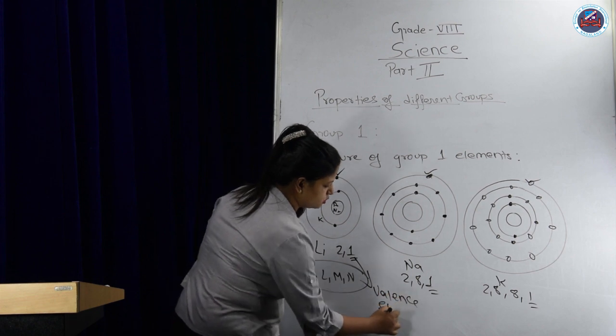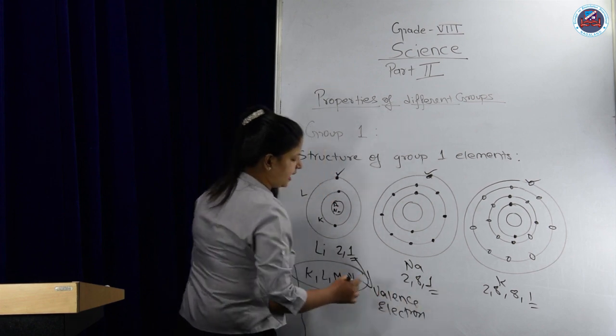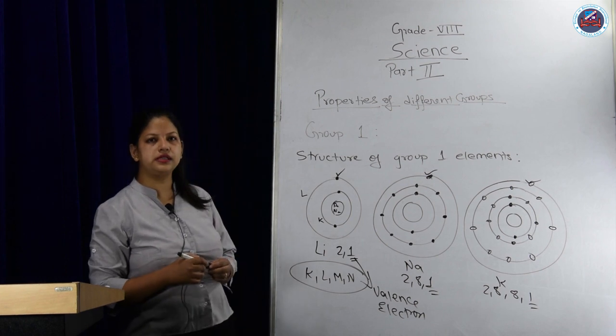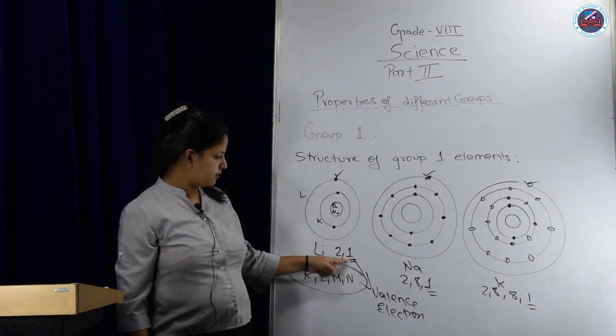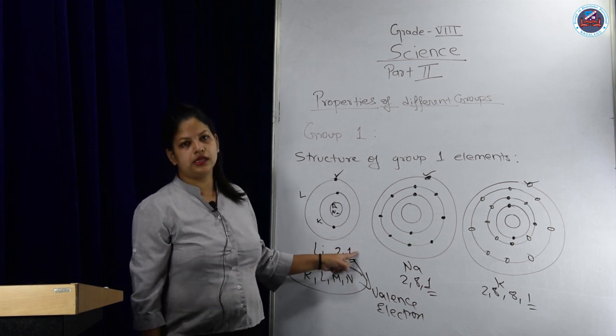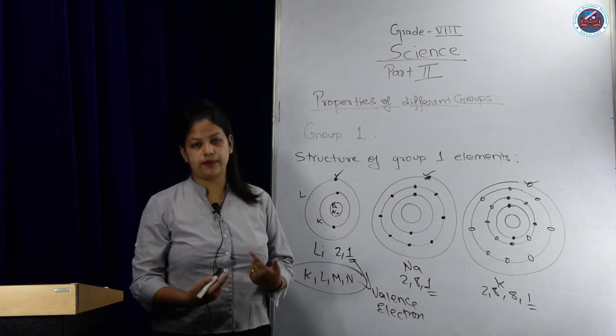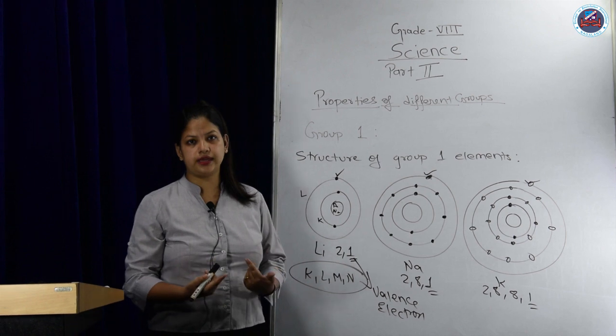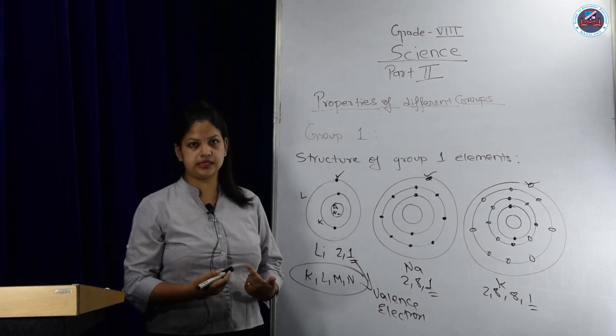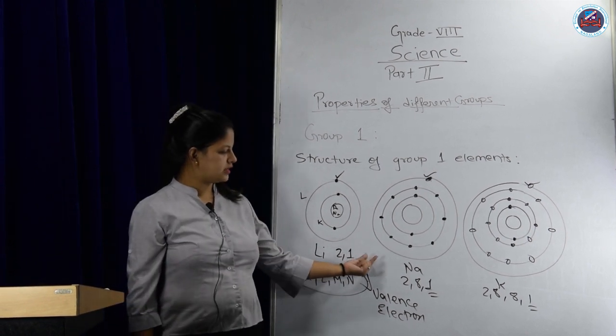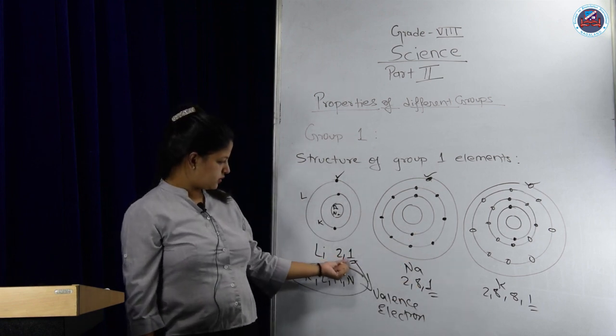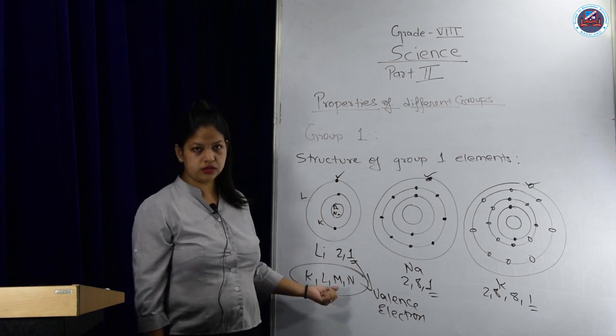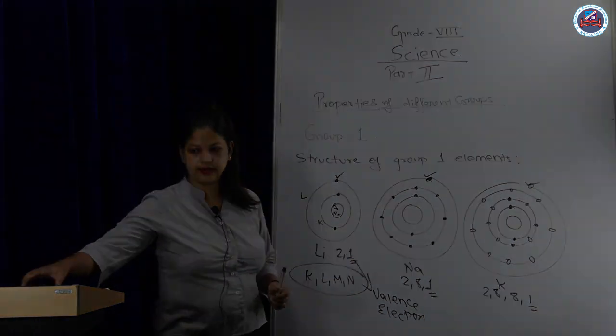We call it valence electron also. This valence electron determines how it reacts with other elements. One element extra means it has one combining capacity with others. So that combining capacity we call valency.